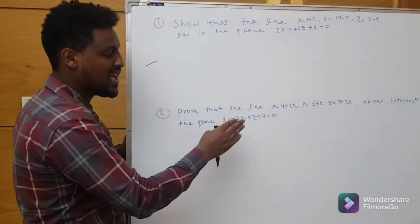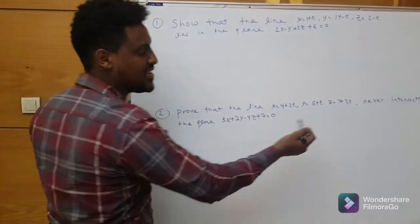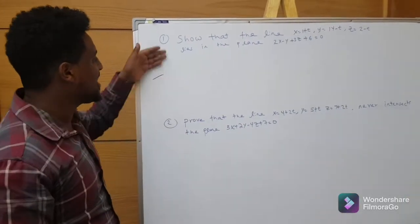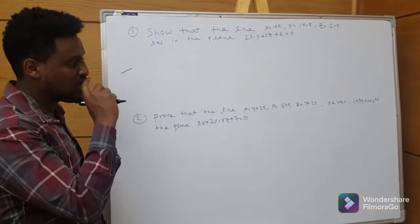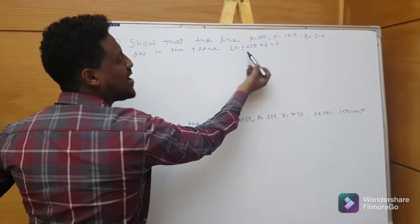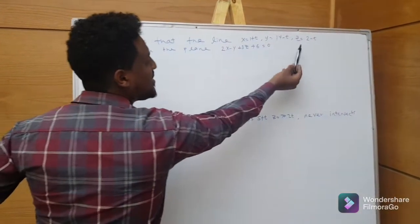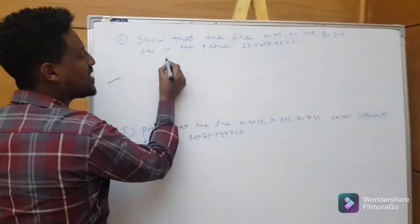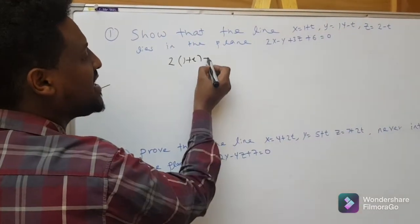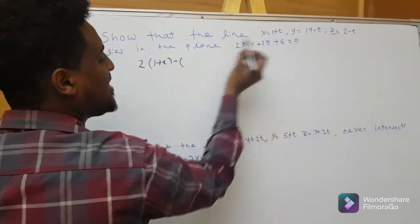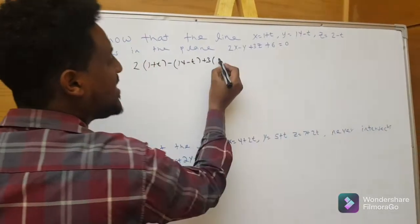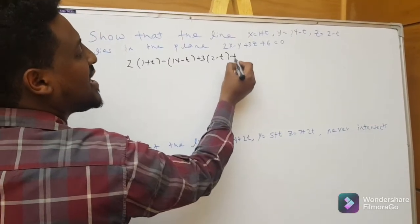If x plus y minus 4z plus 7 is equal to 0, and I have a plane that never intersects in the middle — I have a proof of the line. Line 2: in 2 is equal to x plus 1 plus t, minus y minus t, 14 minus t, plus 3 into z plus 6 is equal to 0.